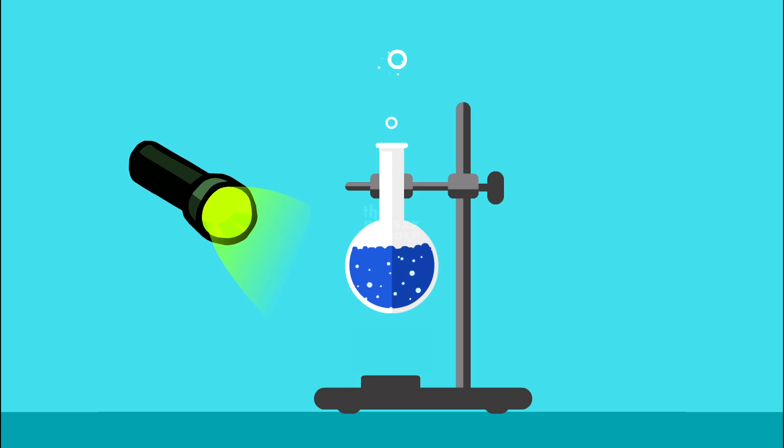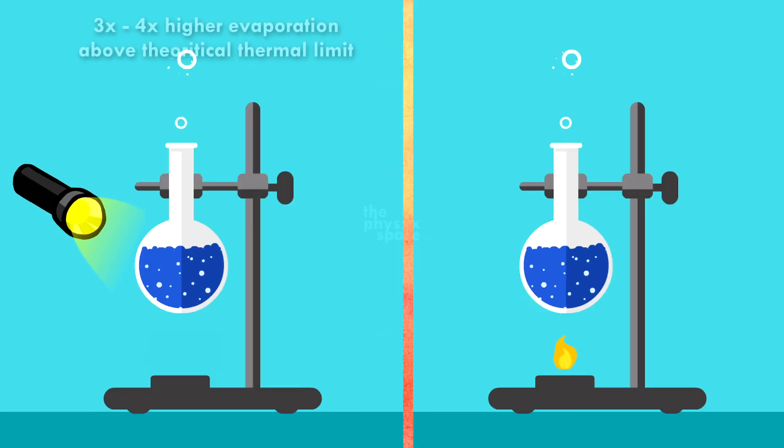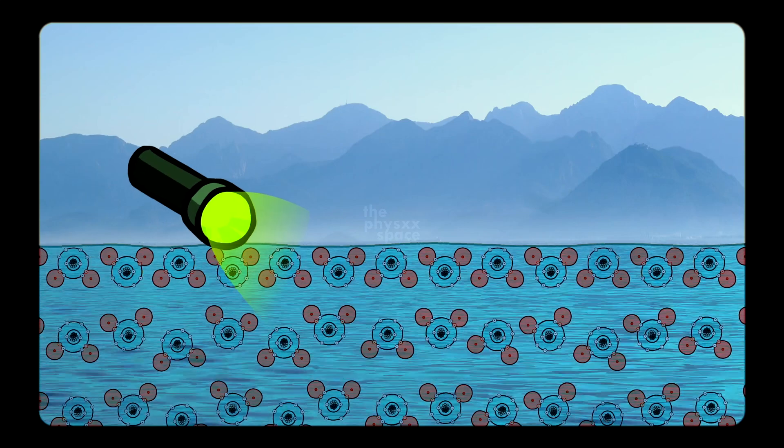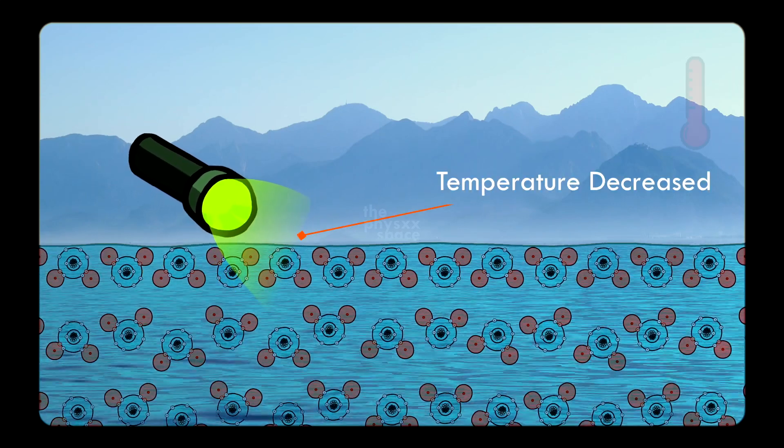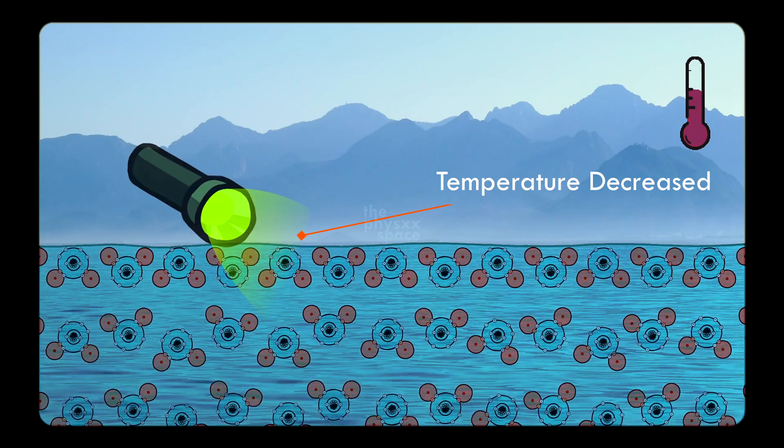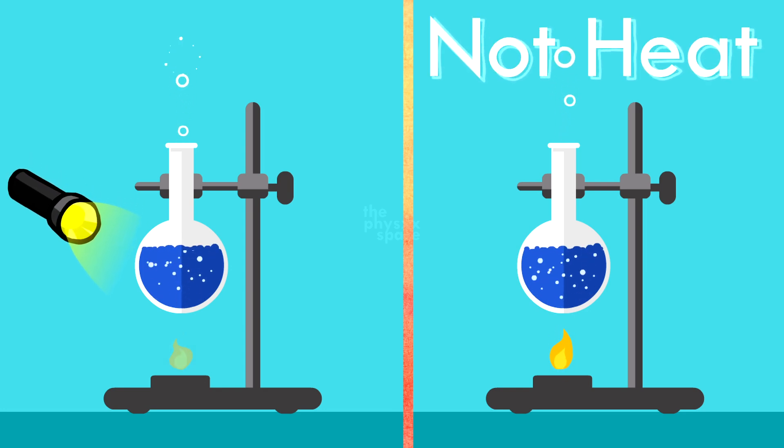Number two, they compared the evaporation rates under light exposure to those achieved by directly heating the samples, and found that the light-driven evaporation could exceed the theoretical thermal limit. Number three, they observed that the air temperature above the illuminated water surface actually decreased, contrary to what would be expected from a purely thermal process. This further supported the idea that light, not heat, was the driving force behind the enhanced evaporation.